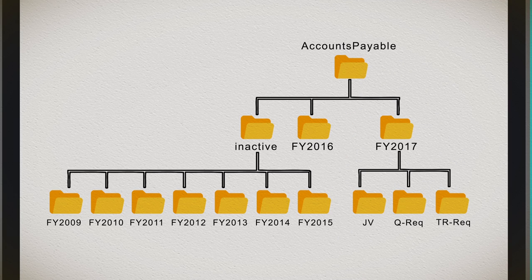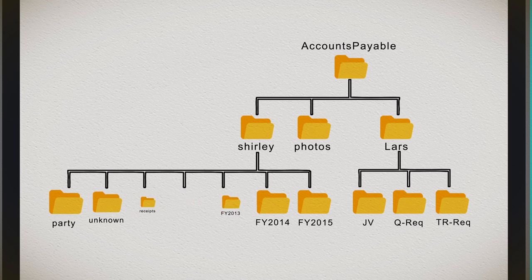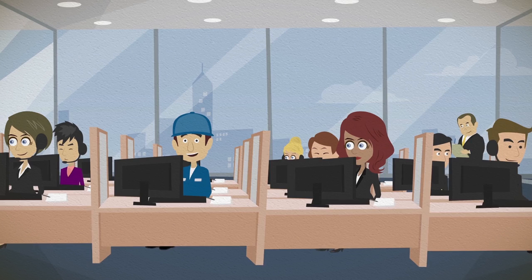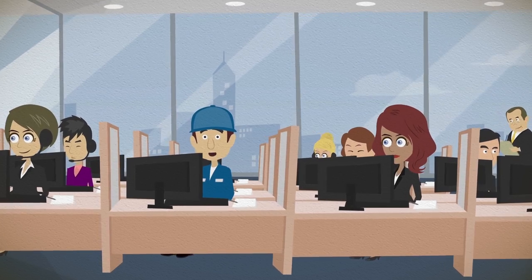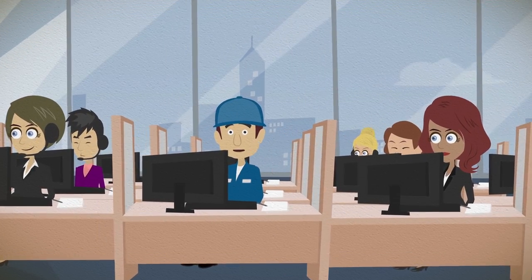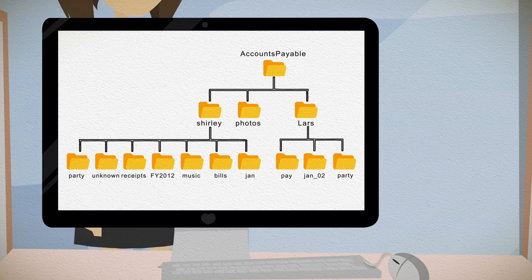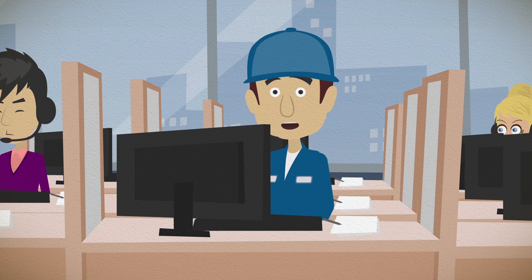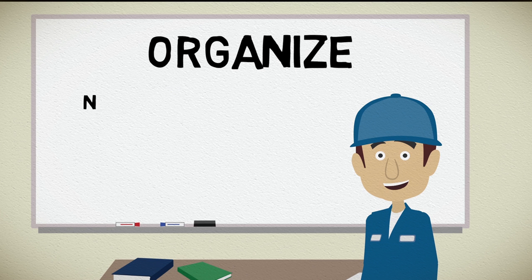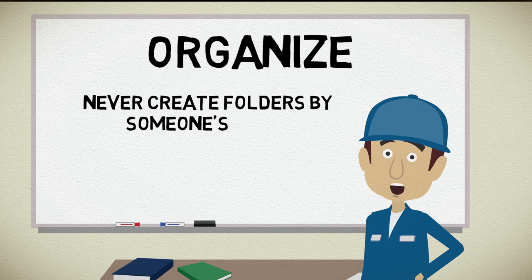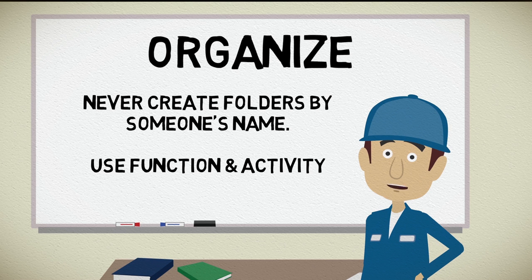If we place financial files in folders named after a person's name, it would be difficult to search and find actual accounts payable records. The data maintenance manager would be searching needlessly through many folders unrelated to finance, such as event photos or staff meeting minutes, all with different retention periods. If the data maintenance manager was able to find the financial records, he would have no idea whether these were the official source of truth records or one of many copies held for convenience only. This is why we never create folders by someone's name — we use function and activity.